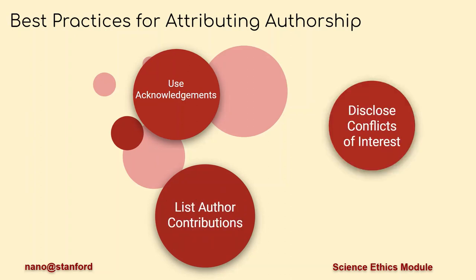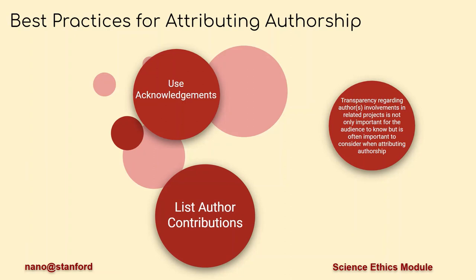Next, disclose conflicts of interest. As already noted, transparency regarding authors' involvement in related projects is not only important for the audience to know, but is often important to consider when attributing authorship.